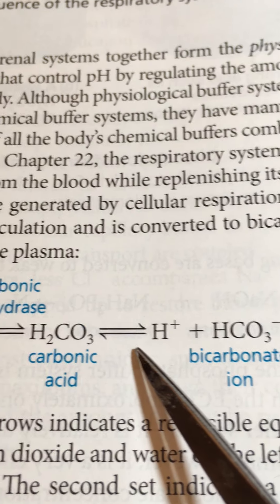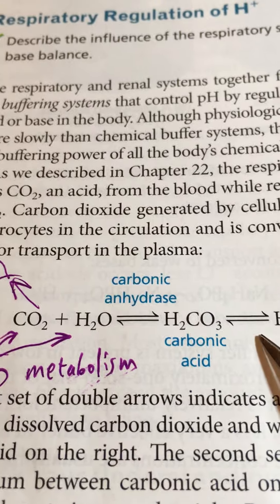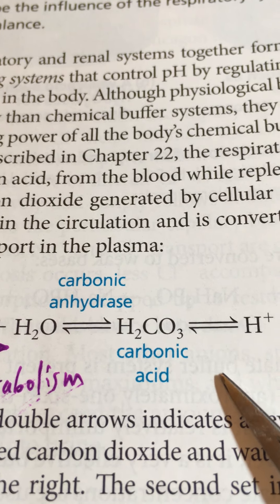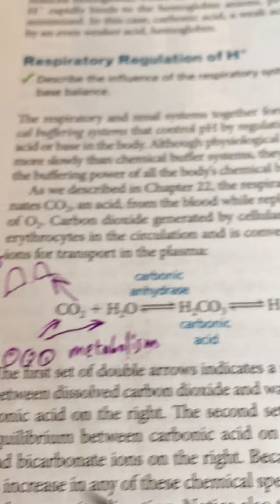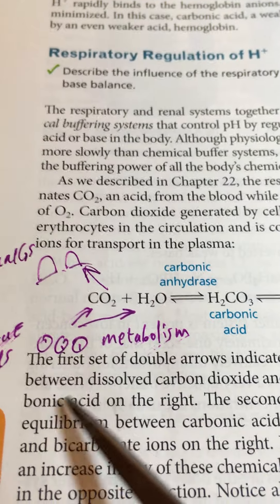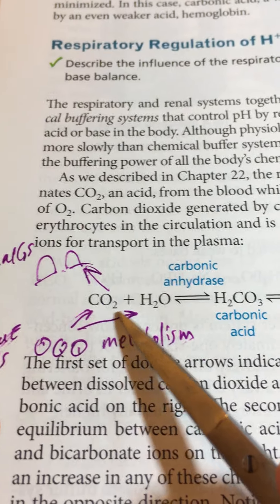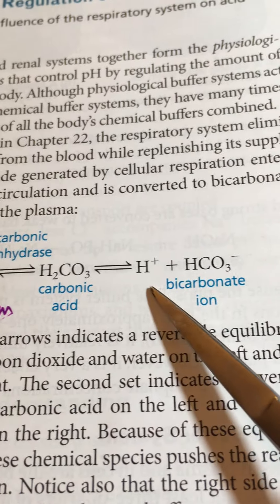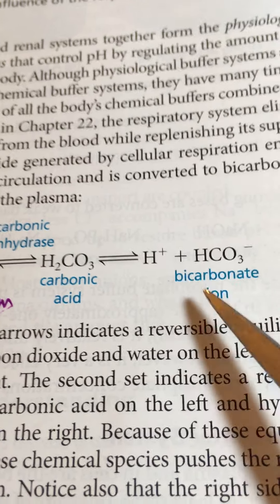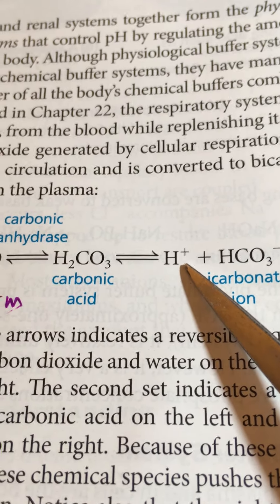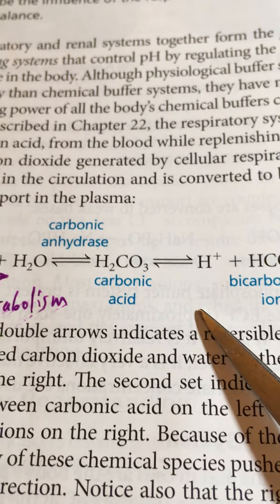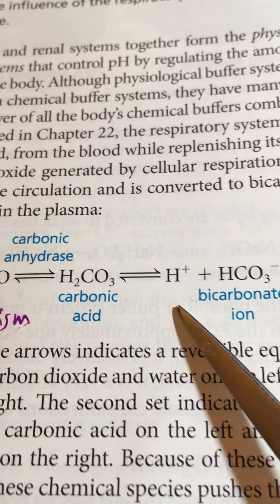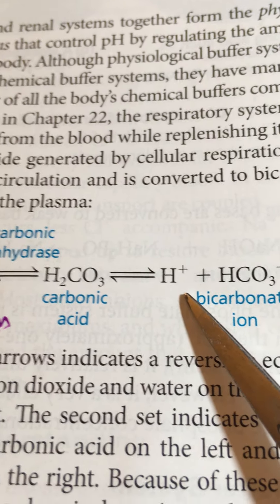We have a reversible reaction, which invokes Le Chatelier's principle — the equation moves left or right depending on whether you're adding something to one side or removing it. Near the tissues, we're adding CO2 to water, so by Le Chatelier's principle we're producing a lot of acidity. Bicarbonate is a buffer, but hydrogen ion is an acid component, so tissue near active cells tends to be more acidic than average blood.